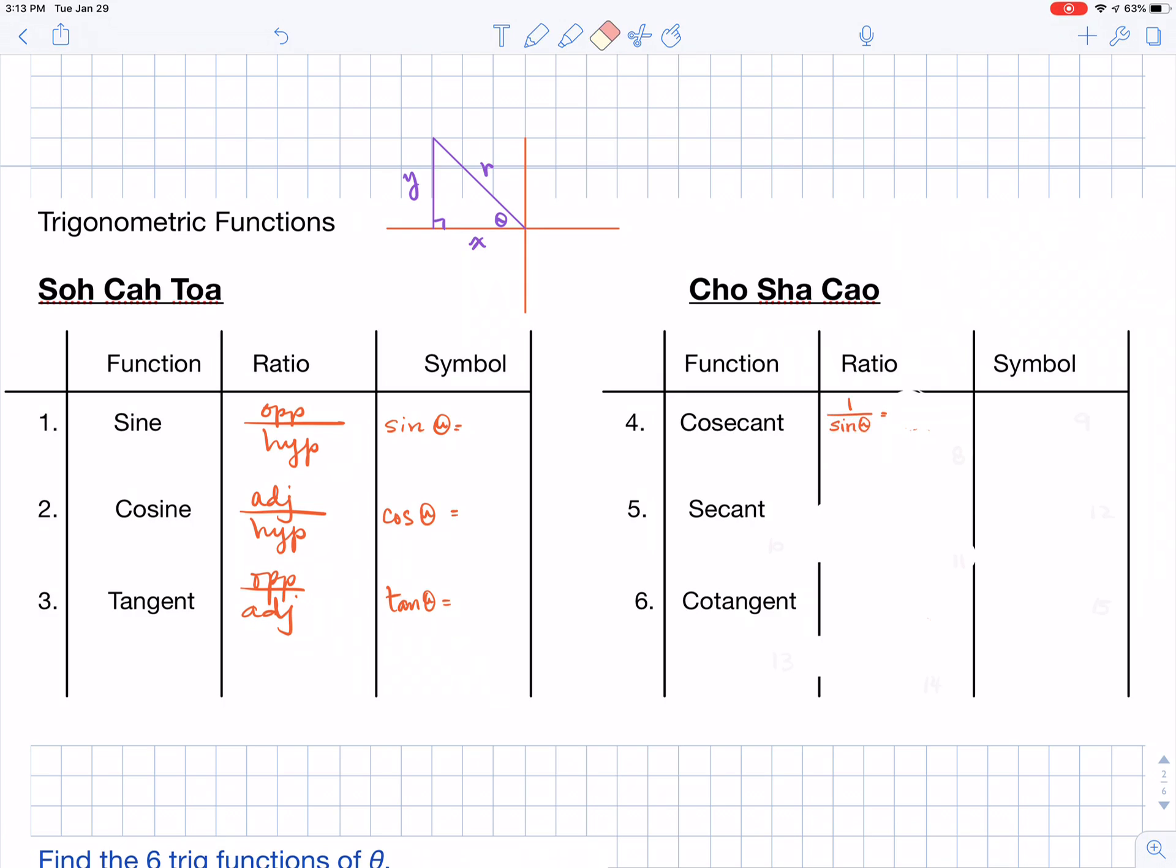The ratio for cosecant is always going to be one divided by sine. Now, another way to say one divided by is reciprocal of.